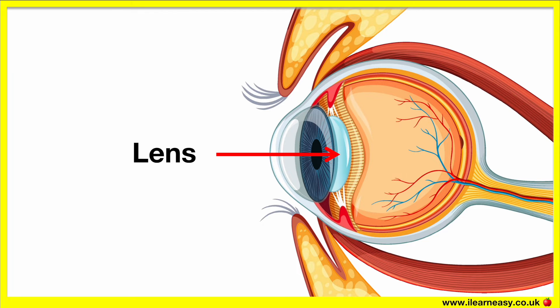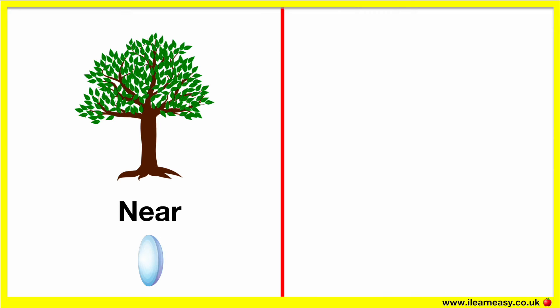The lens is behind the pupil and helps us to see things clearly. The lens focuses and defocuses depending on how far an object is, doing this by changing its shape. The ciliary muscles help to control the shape of the lens. If something is close to your eye, the ciliary muscles contract and make the lens thicker. If something is far away, the ciliary muscles relax and make the lens slim.